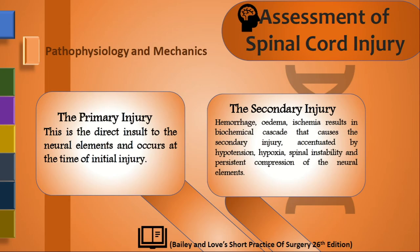Regarding pathophysiology and mechanics, there are primary and secondary injuries. Primary injury involves direct damage to neural elements at the time of initial injury. Secondary injury follows from that — hemorrhage, edema, and ischemia result from biochemical cascades activated by hypotension, hypoxia, spinal instability, and persistent compression to the neural elements.